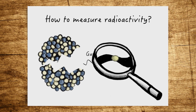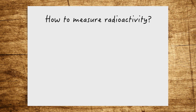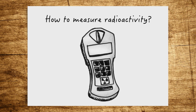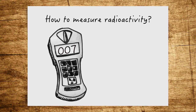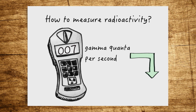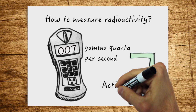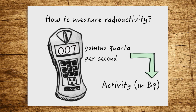This gamma radiation consists of individual gamma quanta. With a measuring instrument, often referred to as a Geiger counter, you can count the number of gamma quanta emitted in one second. Many gamma emitters generate one gamma quantum with each decay. So the number of quanta measured per second corresponds to the activity in Becquerel.